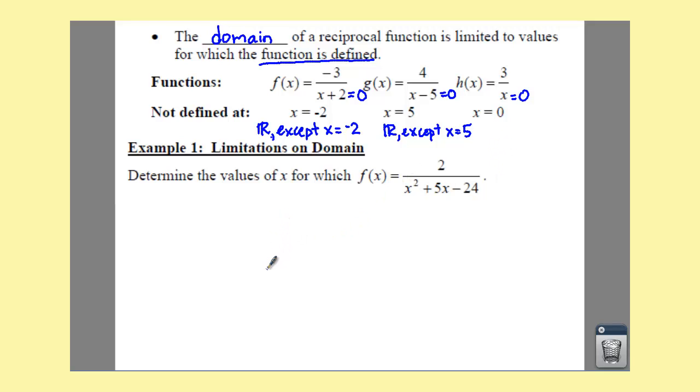So, what we're going to do here for example 1, is we're going to determine our values of x, for which f of x equals 2 over, is, I forgot the rest of the directions, is not defined. Is not defined. So, that's the way your direction should say in your book. So, what we're going to do is, we're not even going to worry about our numerator, we're just going to take our denominator, and we're going to set x squared plus 5x minus 24, and we're going to set that equal to 0, and notice we have an x squared, so that probably means we need to factor.